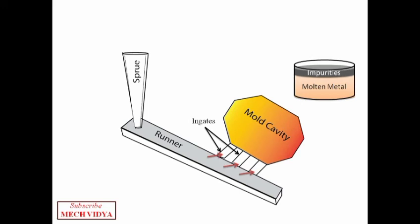For this purpose, the runner is extended up to a small length. What happens is when the molten metal flows through the sprue to the runner, the metal first flows and hits the runner extension at the extreme right side, and then it enters the cavity through the in gates.